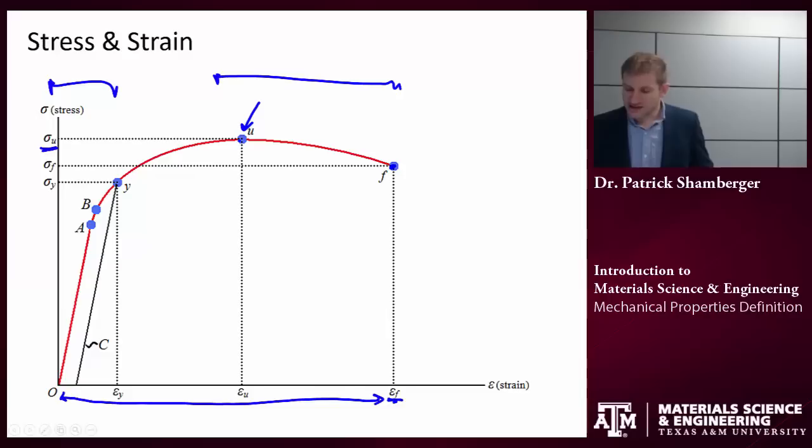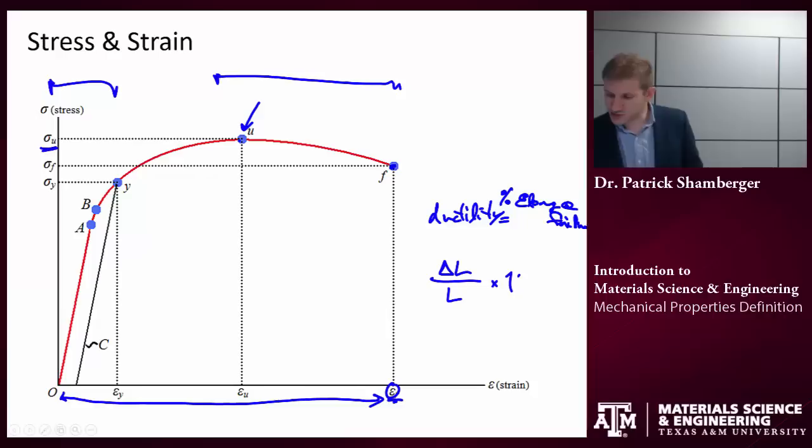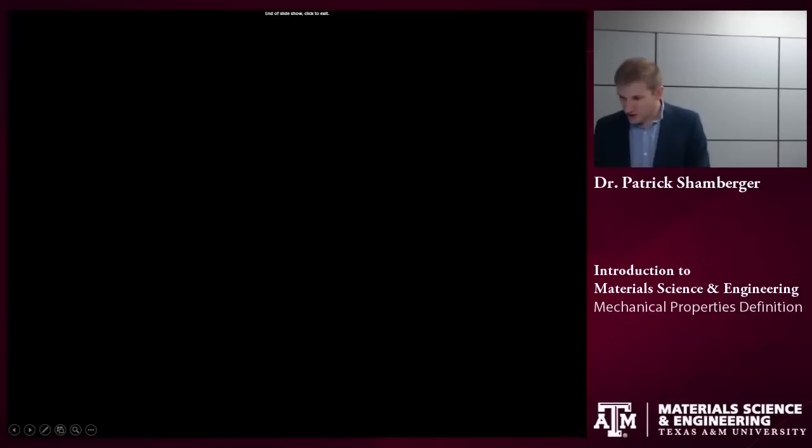One thing that we often talk about in materials is their ductility. How much can they deform before they break? And so, one measure of ductility is the percent elongation at failure. And that is exactly what the failure strain is, right? So, a percent elongation would be delta L over L times 100. And strain, again, remember, is just delta L over L. So, that is ductility.